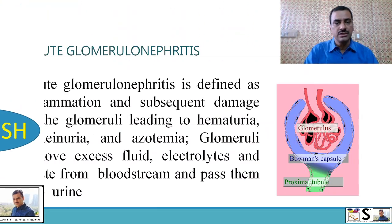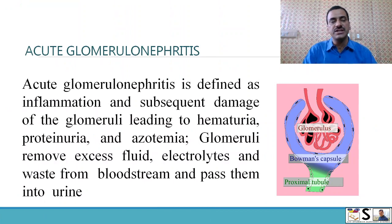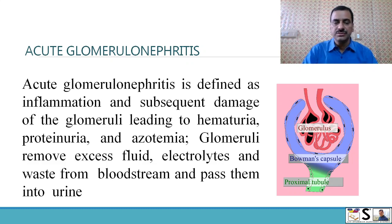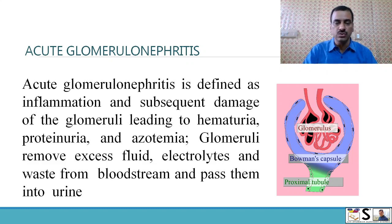What is acute glomerulonephritis? Acute glomerulonephritis is defined as inflammation and subsequent damage of the glomeruli, leading to hematuria, proteinuria, and azotemia. Glomeruli remove excess fluid, electrolytes, and waste from the bloodstream and pass them into urine. This is the functional unit of the kidney — the glomerulus.